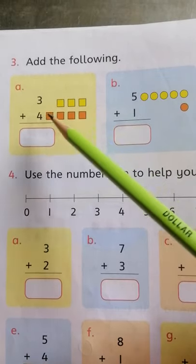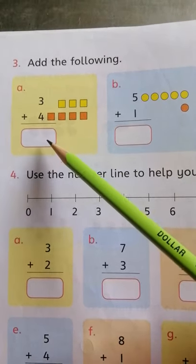These are 1, 2, 3, 4, 5, 6, 7. So you will write here 7.